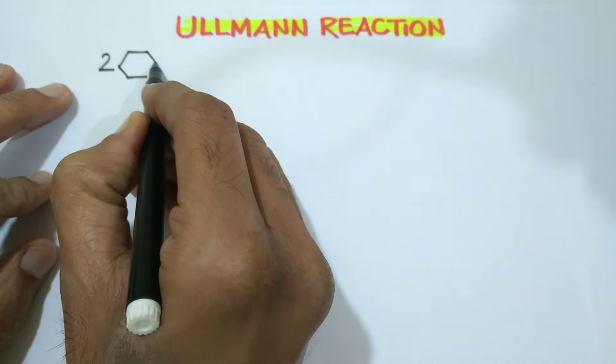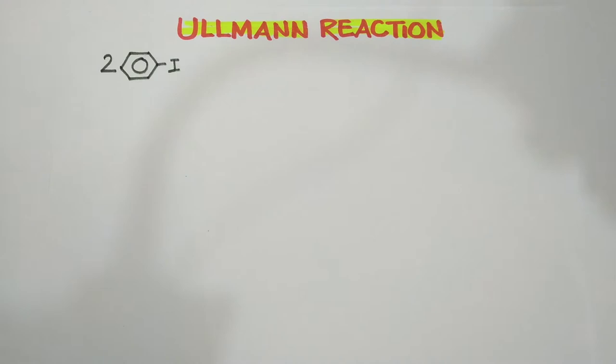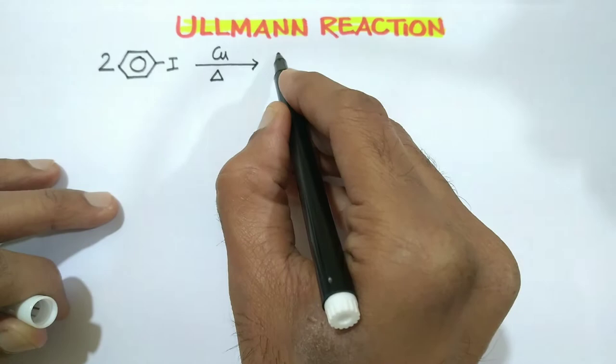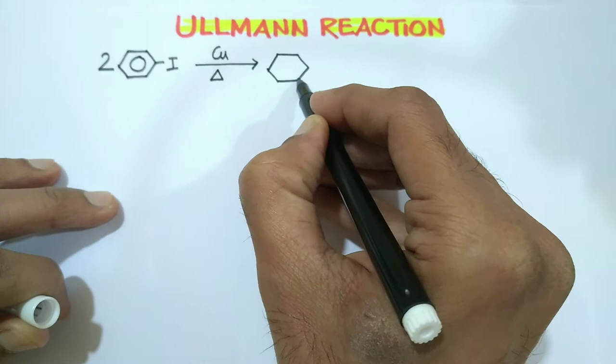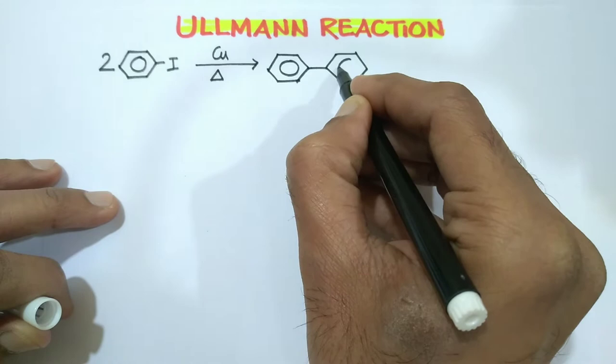Two moles of aryl iodide, benzene attached with iodine, in presence of copper and heat, to give biphenyl type of compound, means two benzene rings are attached to each other.